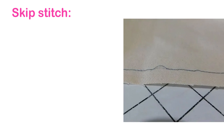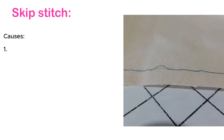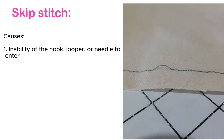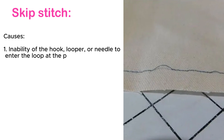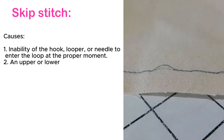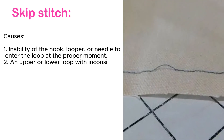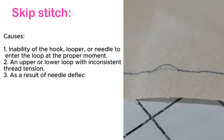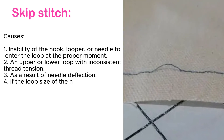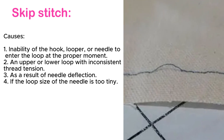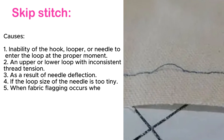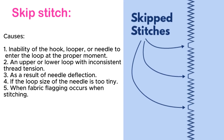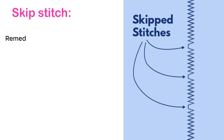Skip stitch. Causes: inability of the hook, looper, or needle to enter the loop at the proper moment. An upper or lower loop with inconsistent thread tension. As a result of needle deflection, if the loop size of the needle is too tiny. When fabric flagging occurs when stitching.